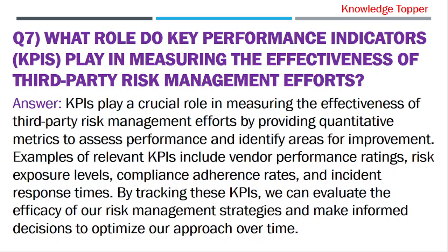KPIs play a crucial role in measuring the effectiveness of third-party risk management efforts by providing quantitative metrics to assess performance and identify areas for improvement. Examples of relevant KPIs include vendor performance ratings, risk exposure levels, compliance adherence rate, and incident response times. By tracking these KPIs, we can evaluate the efficacy of our risk management strategies and make informed decisions to optimize our approach over time.